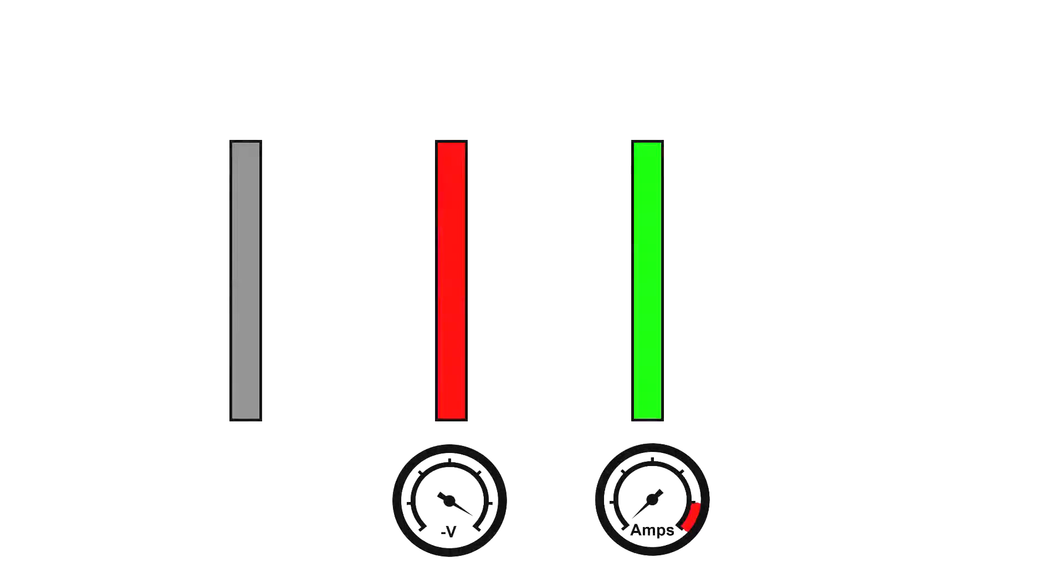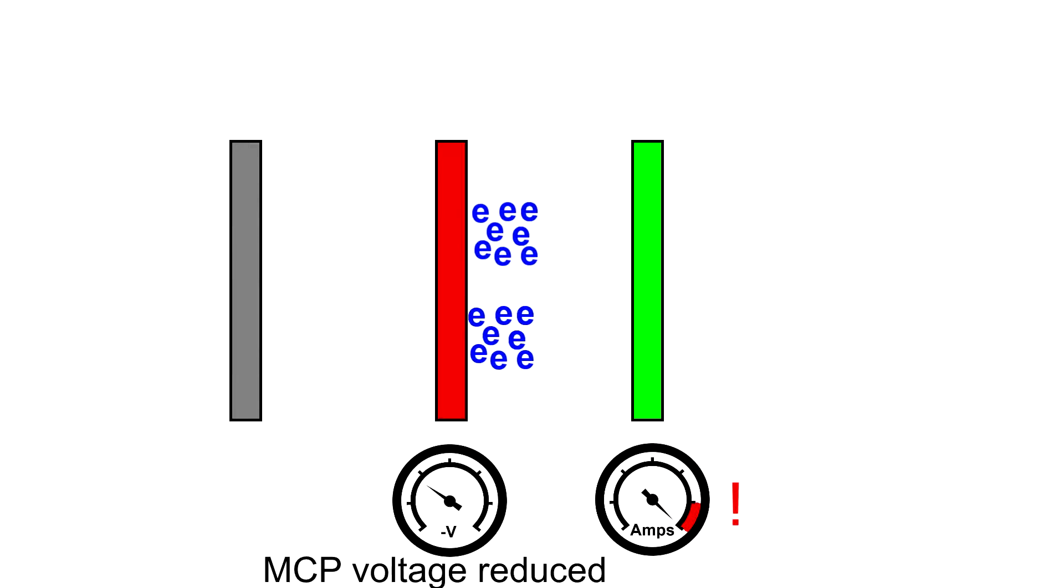Pretty much all gen 2 and 3 tubes, even the very early gen 2 tubes, will have automatic gain control. When the screen brightness starts exceeding the maximum, automatic gain control will reduce the voltage to the microchannel plate. This hence lowers the gain and reduces the amount of electrons that get released by the microchannel plate and reach the phosphor screen. However, automatic gain control can only go so far.